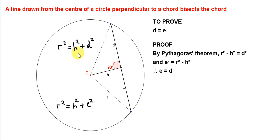We want to prove that D equals E, so we can rearrange this to make D² the subject, and we can rearrange this equation to make E² the subject. Rearranging this one here, we get D² = R² - H². We just bring the H² over.